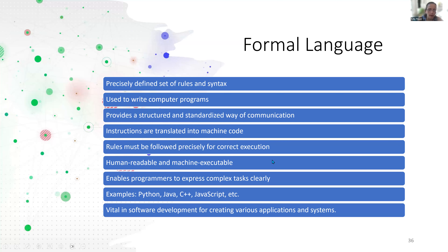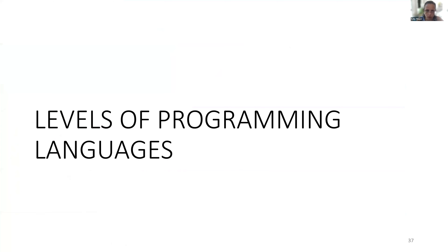Formal languages are both human-readable and machine-executable. They enable programmers to express complex tasks clearly to their computers. Examples of formal languages include Python, Java, C++, JavaScript, and many more. They are vital in software development for creating various applications and systems. We are going to work on learning the Python formal computing language.